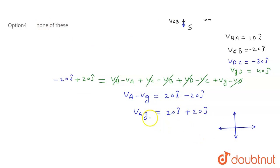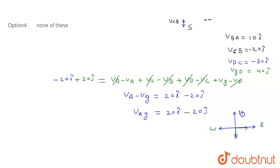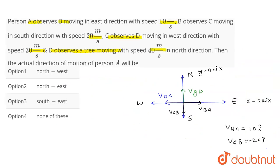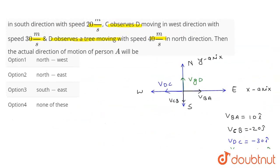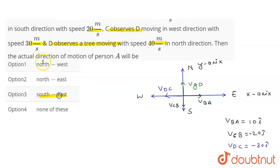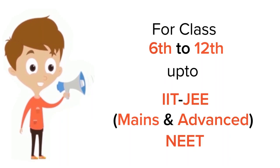Drawing the result: 20î is in the east direction and −20ĵ is in the south direction. The magnitude components are equal at 20 each, giving an angle of 45 degrees. So the direction is south-east, and the third option is the correct answer.